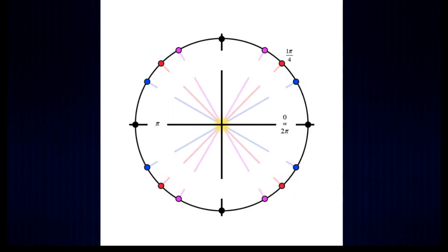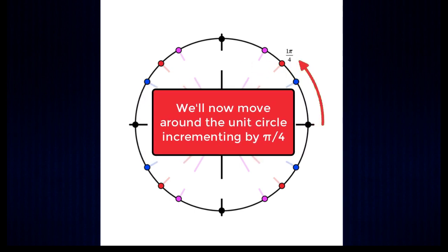So let's continue with the red angle in quadrant one, one pi over four. So what we're going to do is we're going to go around the unit circle in increments of pi over four to fill in the gaps.